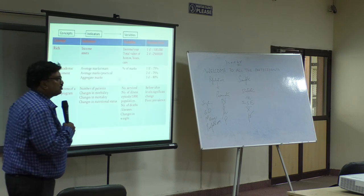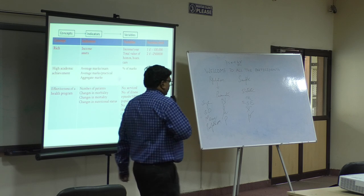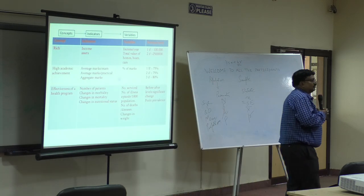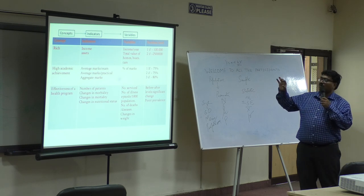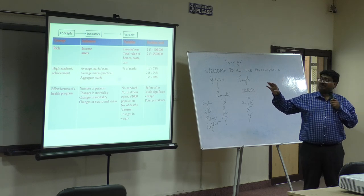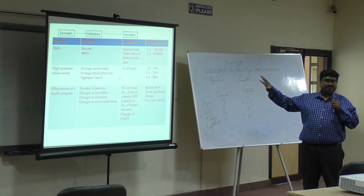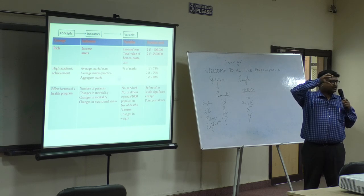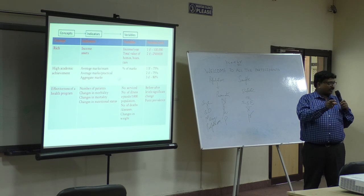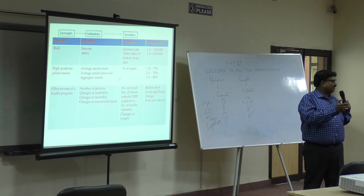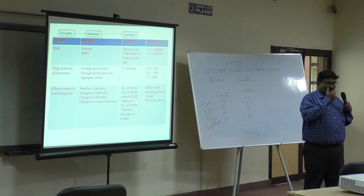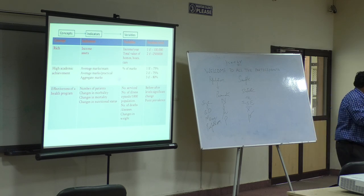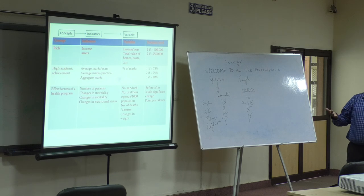Now, this is something which you have to do when you do your literature, that you'll have to figure out what is the concept that you're working on, and you have to figure out as to what are the indicators related with the concept, and what are the variables. If you say somebody is rich, yesterday I was giving this example, like in school, we used to ask each other, you have color TV or a rich guy. That was a parameter. You have an Apple phone, you must be a rich person. You travel in an Audi car, you must be a rich person.